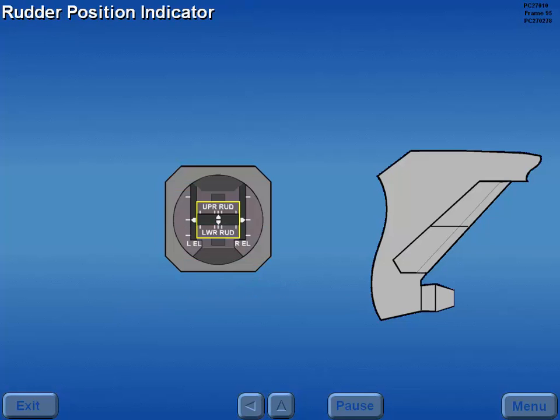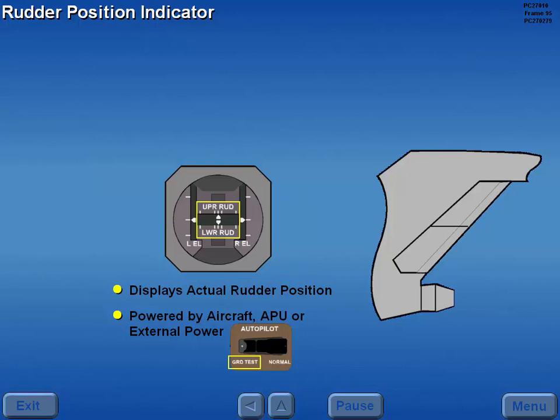The rudder position indicator displays the actual rudder position. When the autopilot ground test switch on the second officer's panel is moved to ground test, external power or the APU can power the yaw dampers.